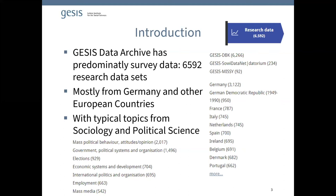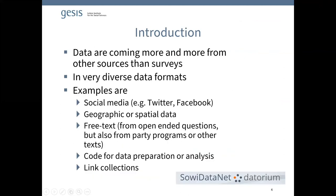We are experiencing that data is coming in more diverse types and formats than before. Examples include social media data like Twitter or Facebook content and geographic information added as linked data to survey data. In the sovi-datanet datorium space, people are giving us more free text information, depositing code intended for data preparation or analysis, and link collections. This is much more than the typical survey data type we experienced before.